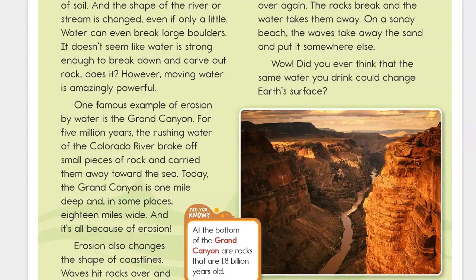Water can even break large boulders. It doesn't seem like water is strong enough to break down and carve out rock, does it? However, moving water is amazingly powerful. One famous example of erosion by water is the Grand Canyon. For five million years, the rushing water of the Colorado River broke off small pieces of rock and carried them away toward the sea. Today, the Grand Canyon is one mile deep and, in some places, 18 miles wide. And it's all because of erosion.